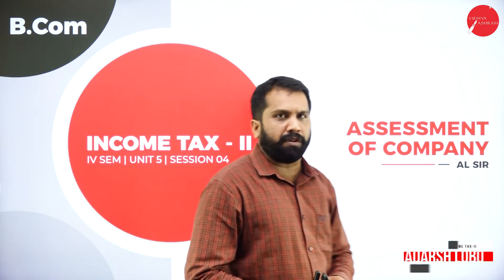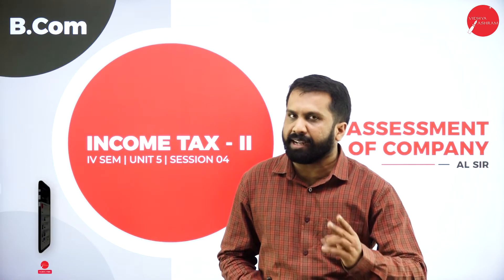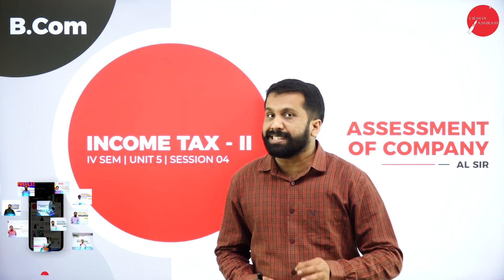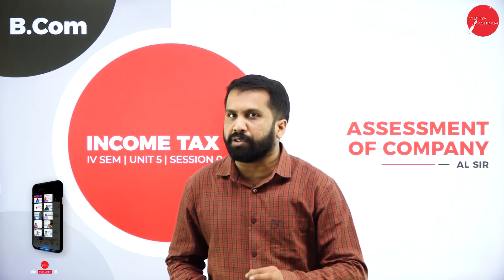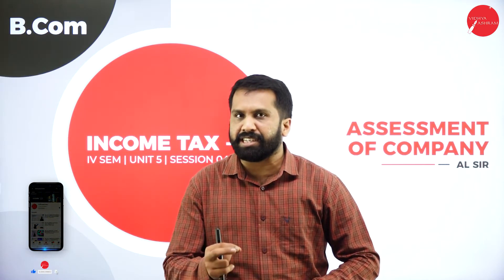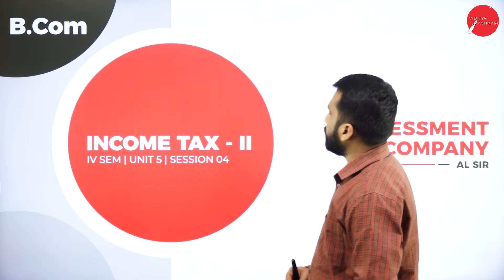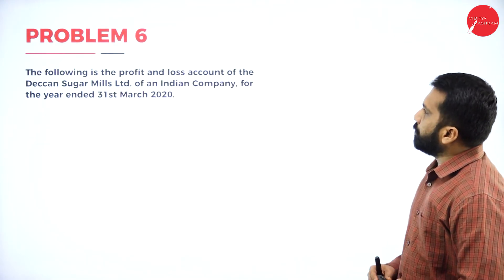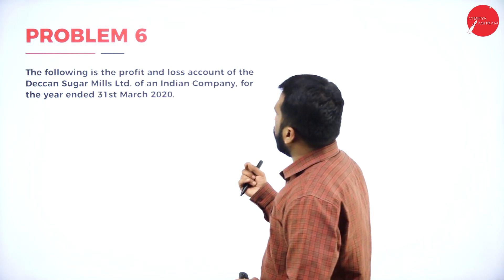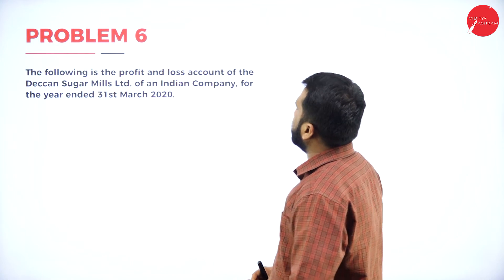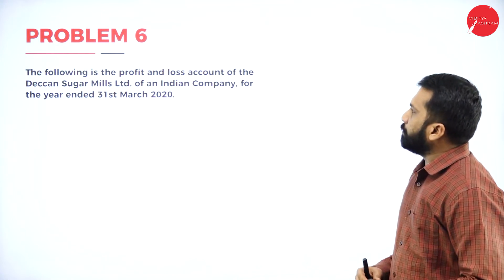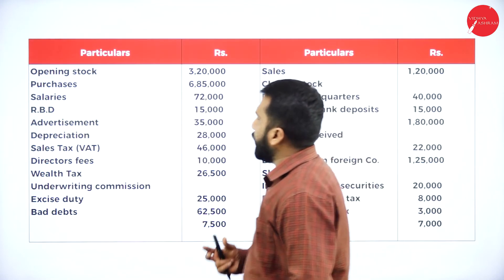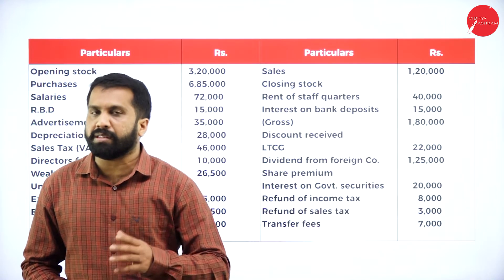In the previous session, we worked out two problems on assessment of company, and those are the problems which are your question paper problems only. Today, this is also a complete 15-mark question for your examination — the easiest one to understand. Your agenda is very simple: the problems you are supposed to do. Problem number 6: the following is a profit and loss account of the Deccan Sugar Mills Limited, an Indian company, for the assessment year 2020.